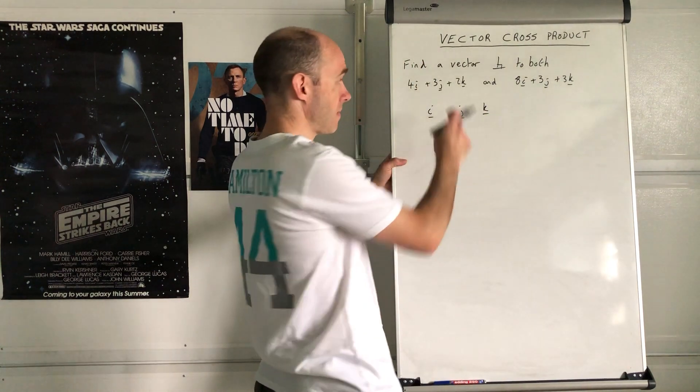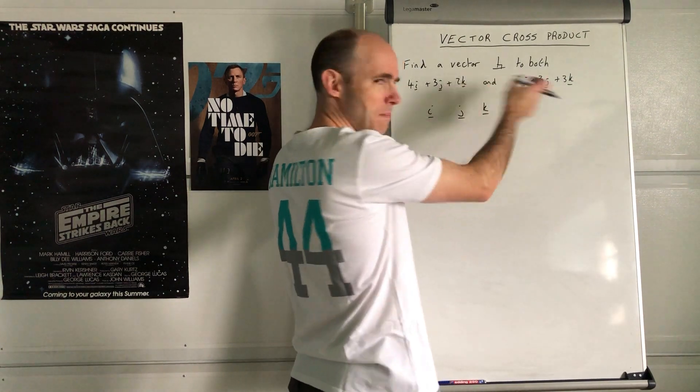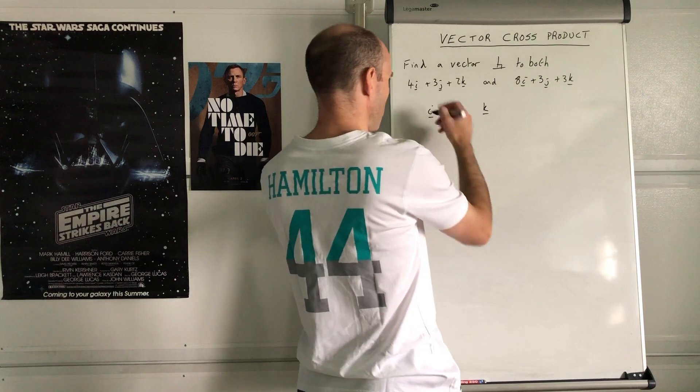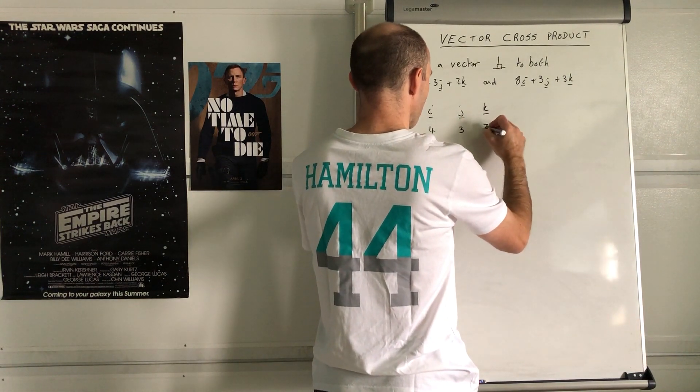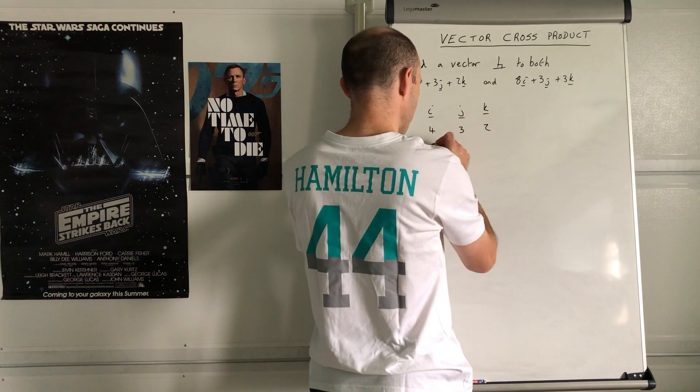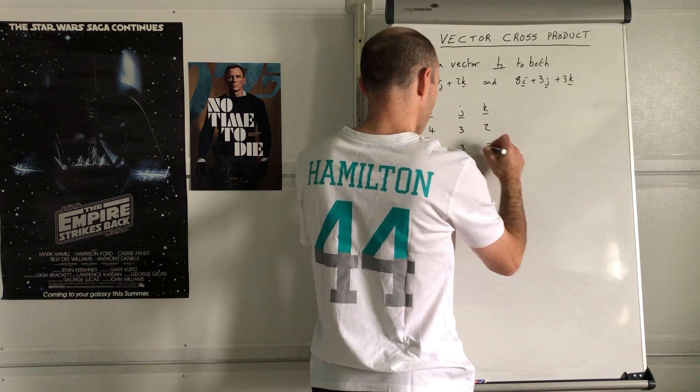It doesn't matter which order you do it in. I normally do it in the order they appear. So the first vector you write out as a row: 4, 3, 2, and the next vector as the third row: 8, 3, 3.